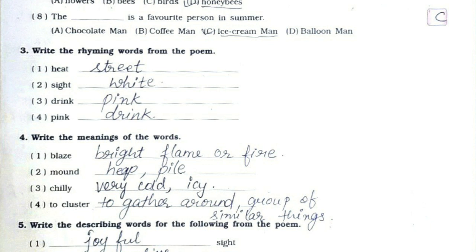Question number 4: write the meanings of the words. First one: bright flame or fire. Second one: heap or pile. Third one: very cold or icy. Fourth one: together around, or group of similar things.